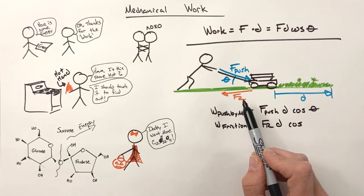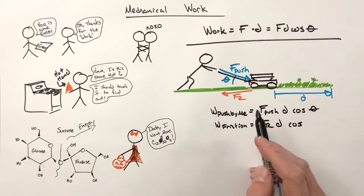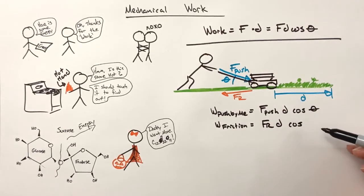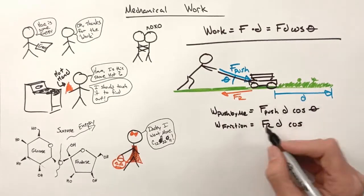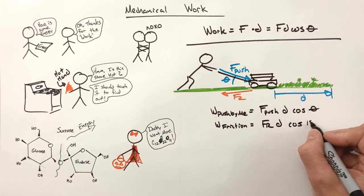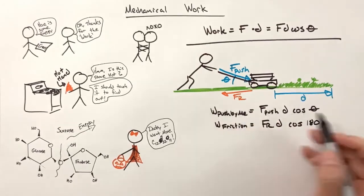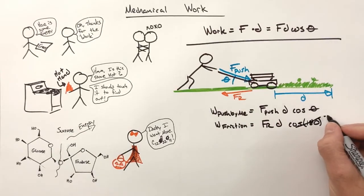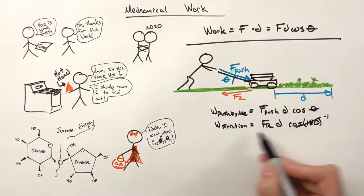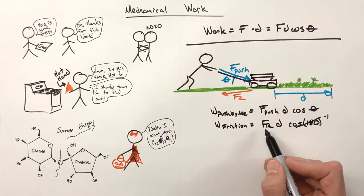Now, how do we know friction is doing negative work on the mower, you ask? Well, going back to this equation, friction is acting backwards, in the opposite direction of displacement. So there is 180 degrees between the displacement vector and the friction vector. Well, the cosine of 180 is negative 1. So the work by friction will be negative.